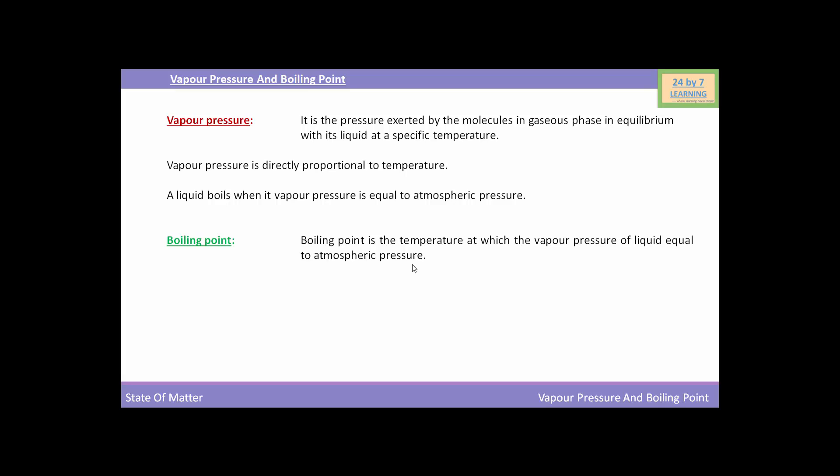Boiling point depends upon the atmospheric pressure. At high altitudes, atmospheric pressure is low. That's why liquids at high altitudes boil at low temperature. At high altitudes, water boils at much lower temperature than in the plains.